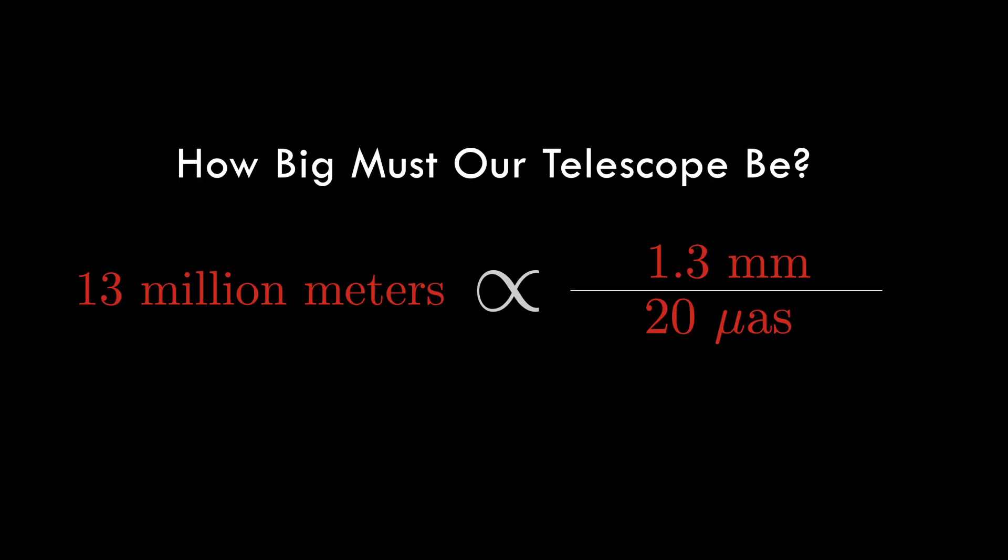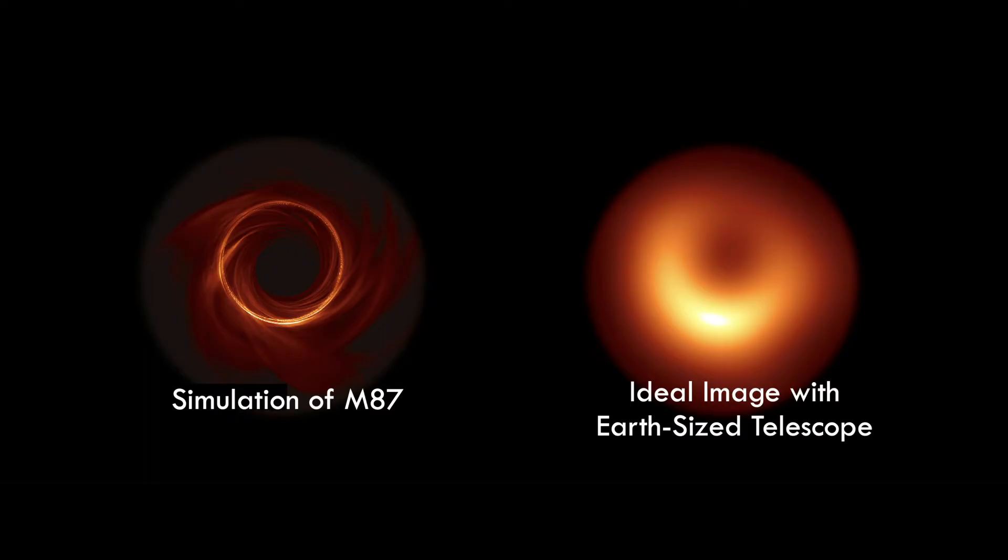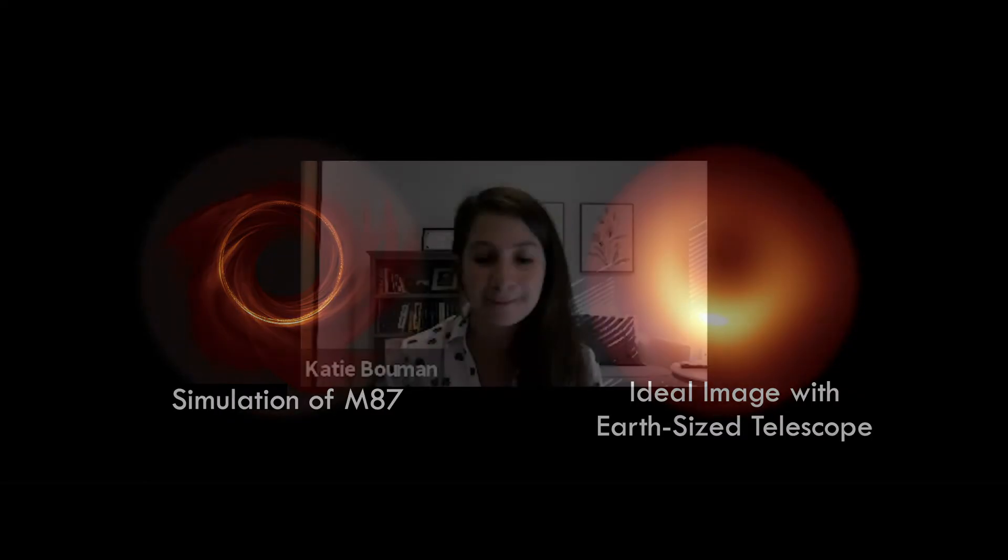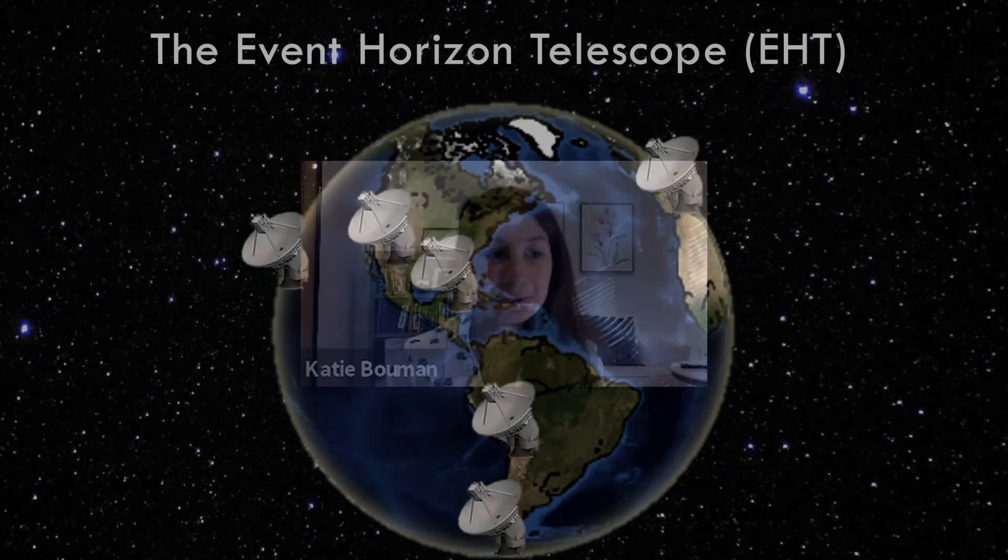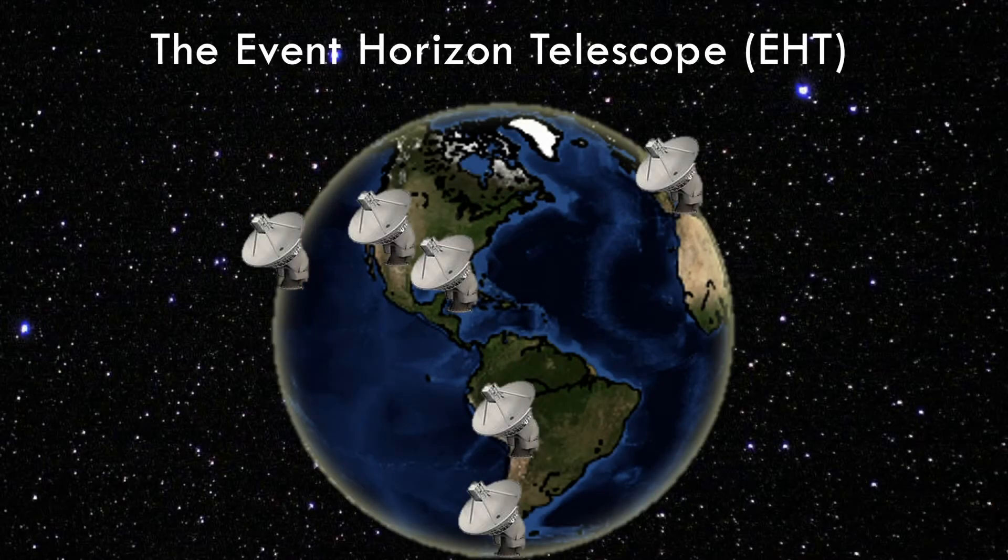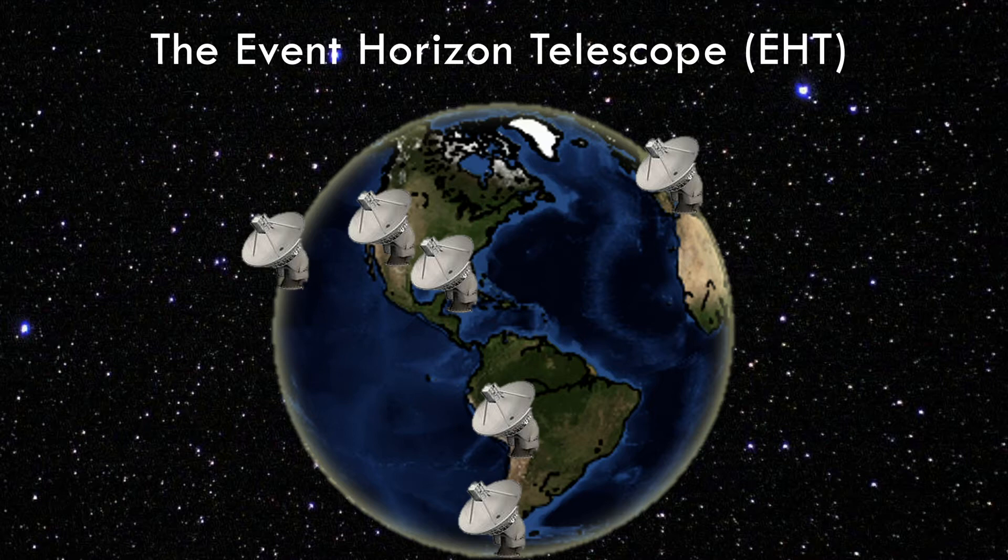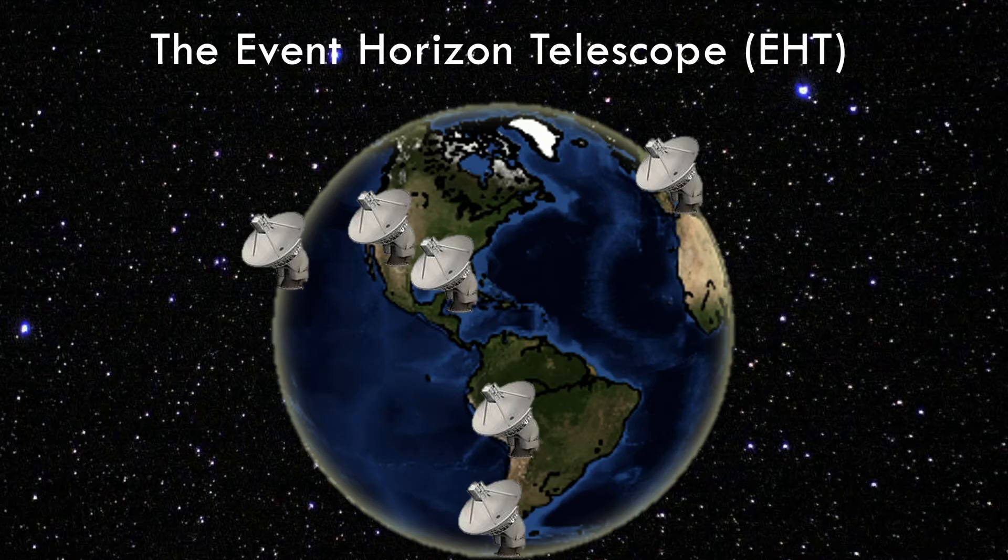And if we could build this Earth-sized telescope, we could just start to make out that ring of light that's indicative of the black hole's event horizon. Well, okay, obviously building a single-dish telescope the size of the Earth isn't possible. But by joining telescopes located around the world, I've been working as part of an international collaboration called the Event Horizon Telescope that built a computational telescope the size of the Earth that was capable of resolving structure on the scale of a black hole's event horizon for the very first time.